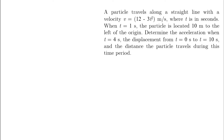A particle travels along a straight line with velocity V equals 12 minus 3T squared meters per second, where T is in seconds. When T equals 1 second, the particle is located 10 meters to the left of the origin. Assuming that the positive direction is to the right, this is our initial condition which states when T equals 1, S equals minus 10 meters.